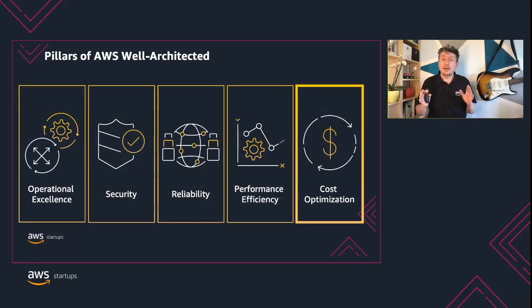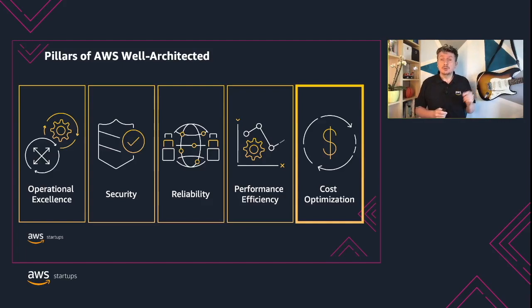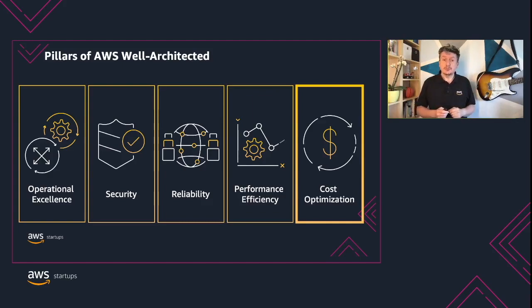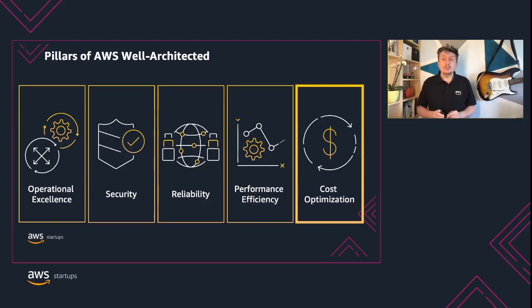As you already know, there are 5 well-architected pillars. Those are operational excellence, security, reliability, performance efficiency, and cost optimization. While I am going to focus on cost optimization today, please make sure to watch the other videos because all these pillars are important.